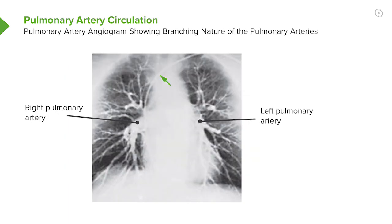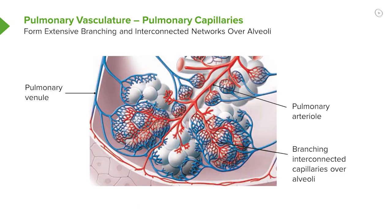This is an invasive pulmonary angiogram. Somebody has injected contrast into the right ventricle, and that contrast has been pumped out down the pulmonary artery. You can see the branching nature of the pulmonary arteries as they're delineated by this contrast, and how the arteries divide and get thinner and smaller as they move out into the distal part of the lung.